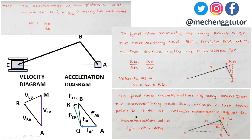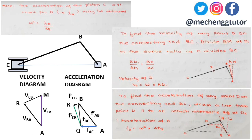To find the acceleration of any point D on the connecting rod BC, draw a line from D parallel to the horizontal AC until it intersects BQ at point D2. The acceleration of D is then given as f_D = omega² × AD2, where omega is the angular velocity of crank AB. Measure the segment AD2 and substitute to get the acceleration of any point D on the connecting rod.